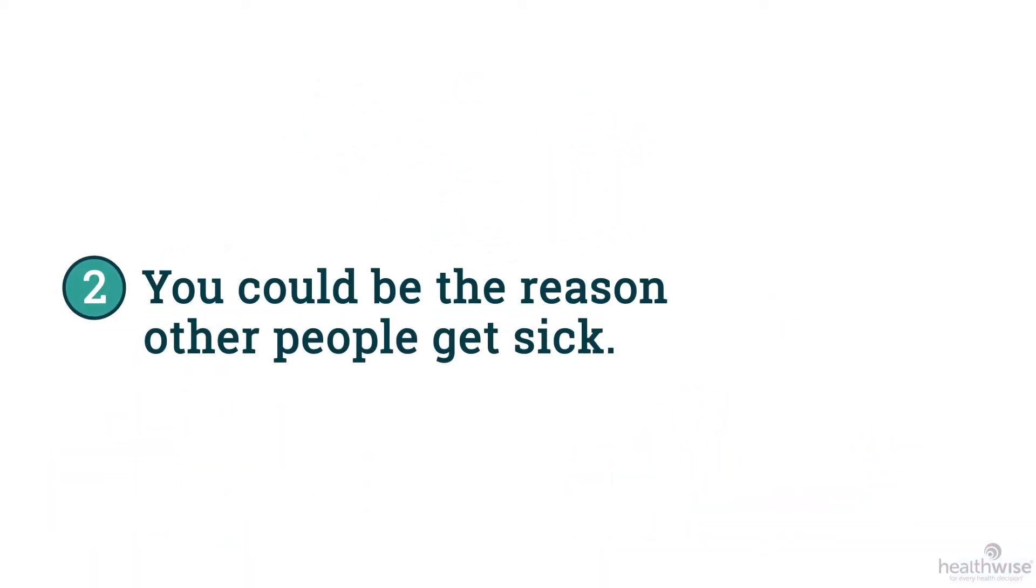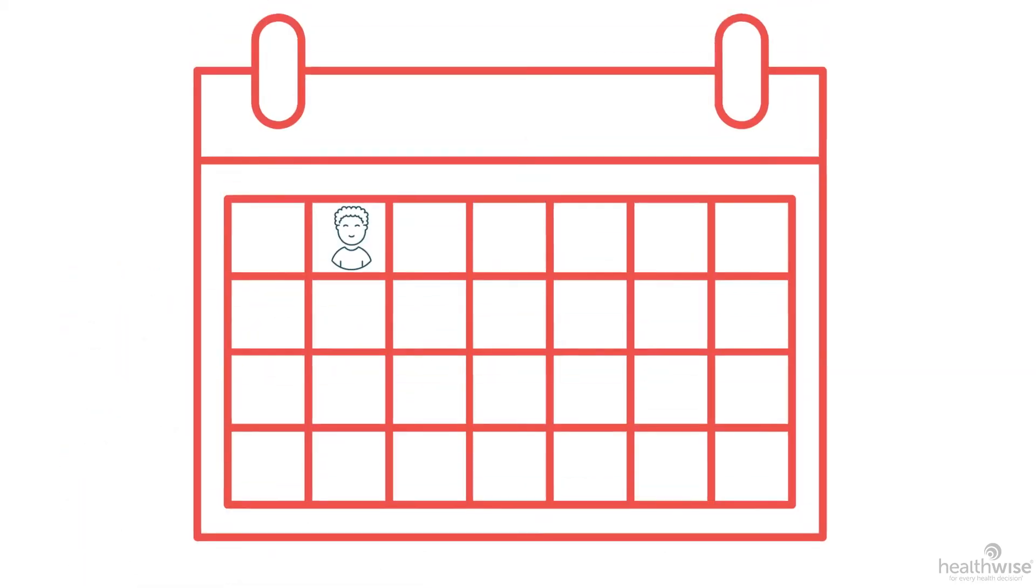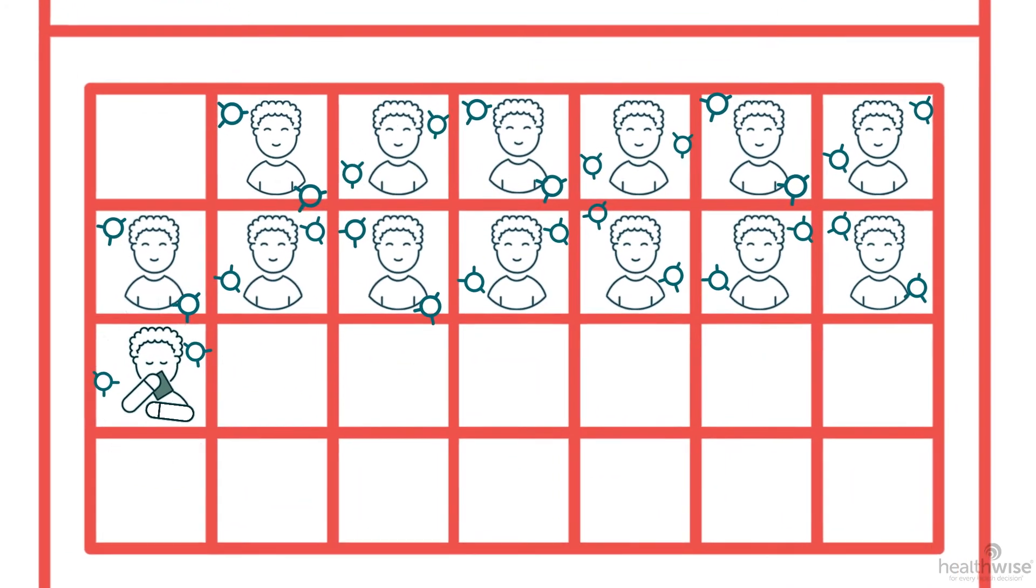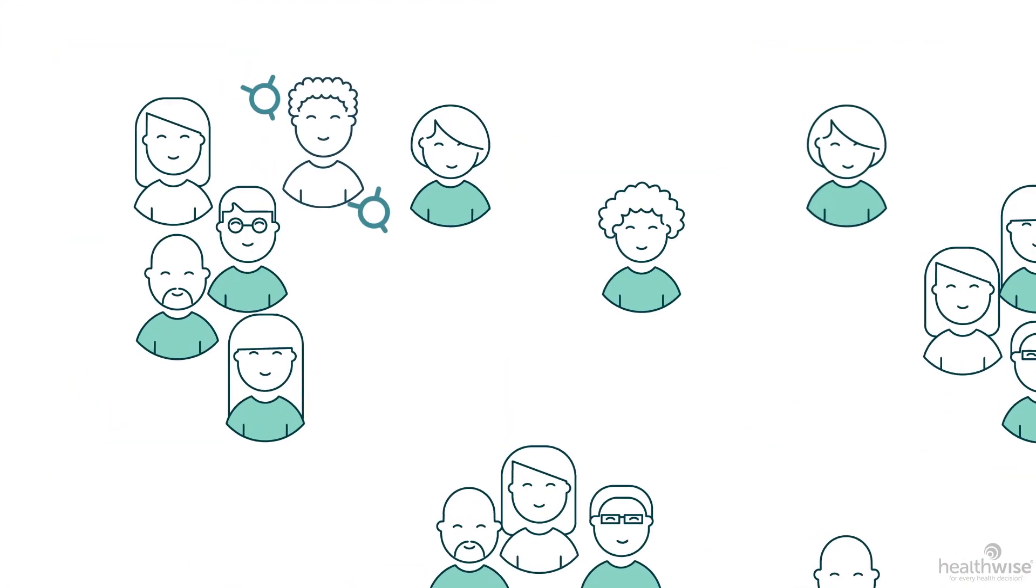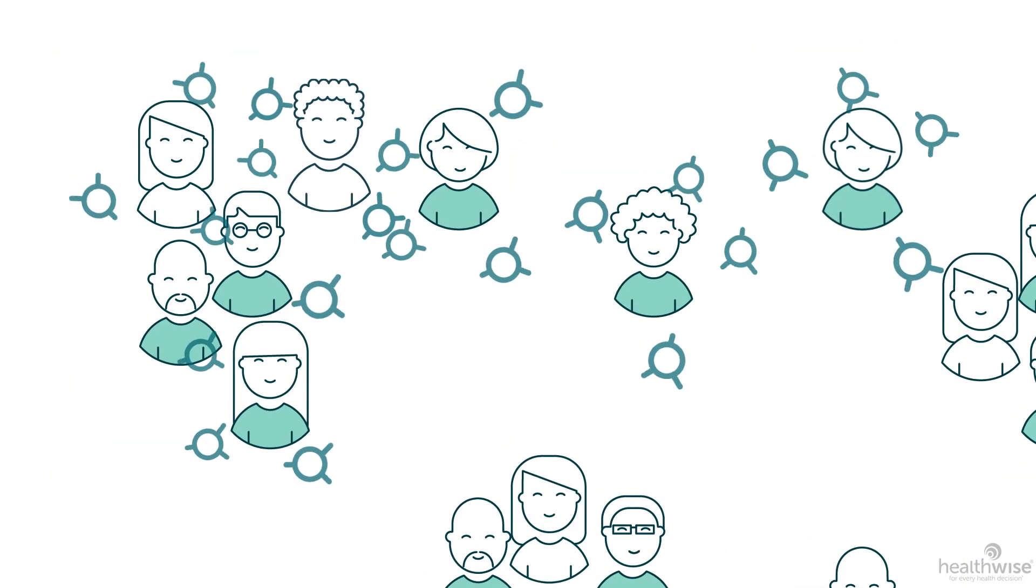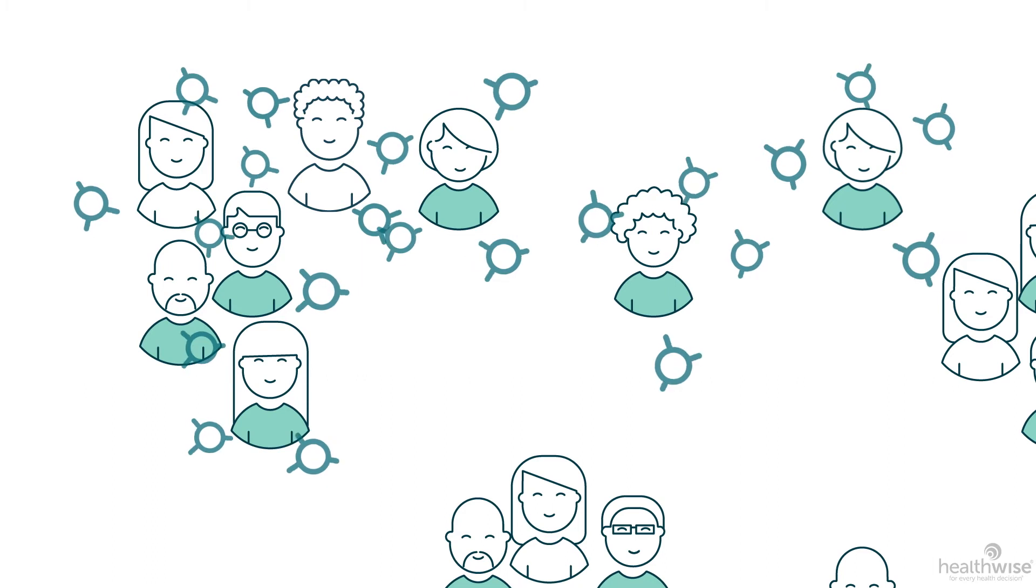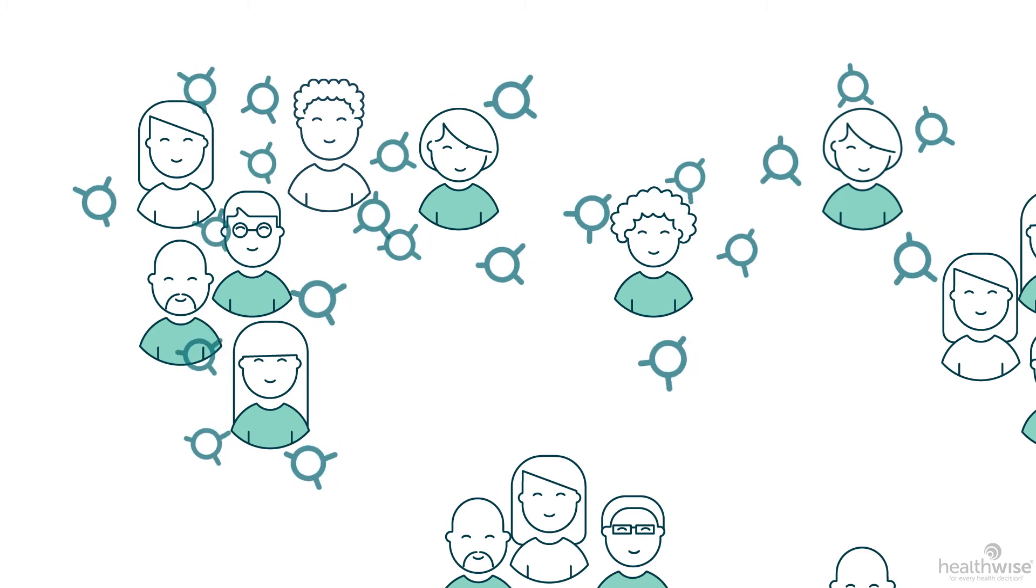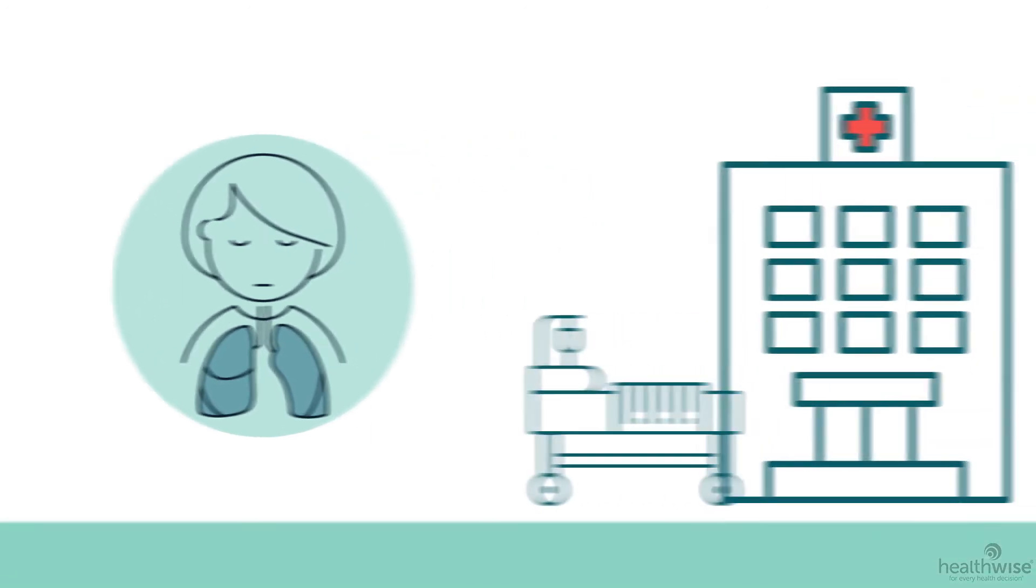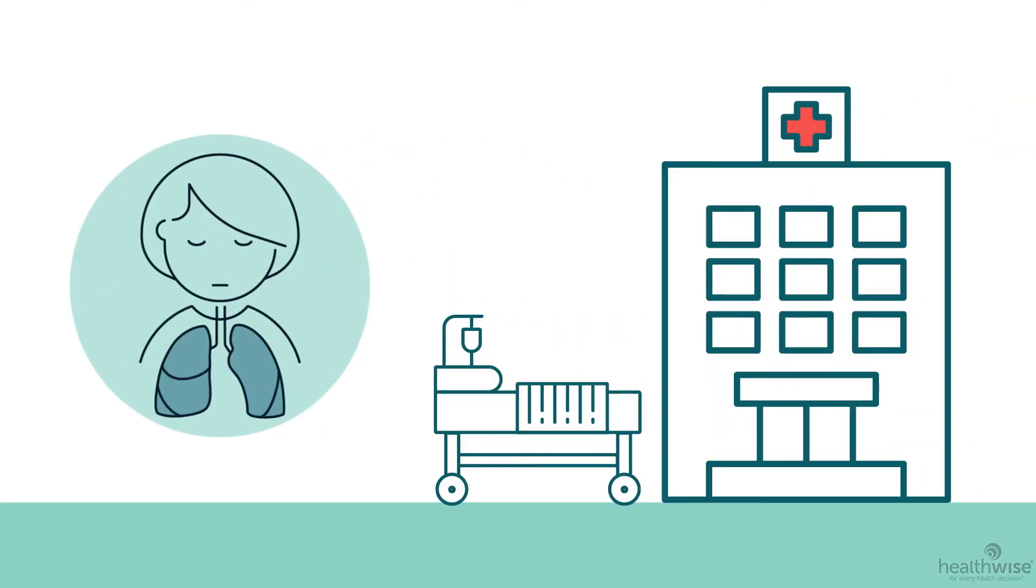Two, you could be the reason other people get sick with COVID-19. It can take up to 14 days for symptoms to show up. During those 14 days, you could spread the disease to your friends, family, co-workers, or the cashier or delivery guy you saw today. Some of them could get very sick and need intensive care. And some of them could die.